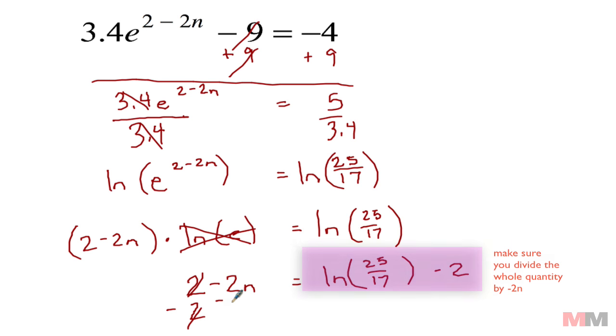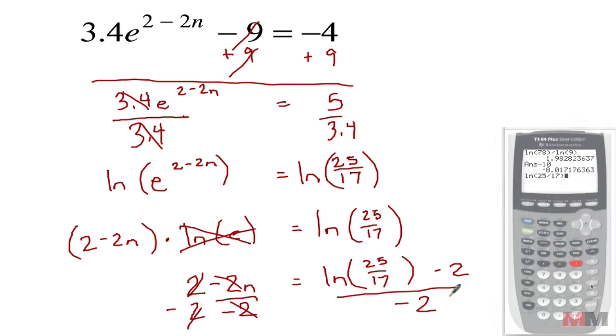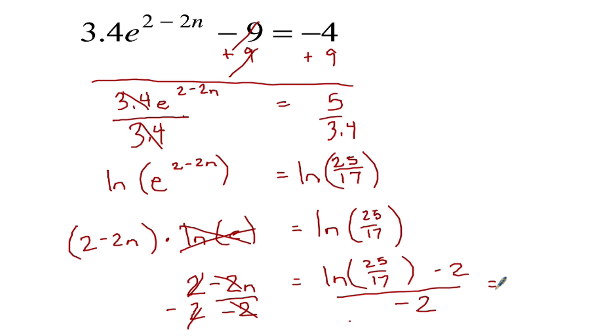Now we're getting closer, we want n by itself. Simple algebra from this point: subtract 2 from both sides and then divide by negative 2. And we got the answer, all of this we can put in the calculator, round it to the nearest tenth, which equals about 0.8. That was a beast of an equation, but it's not too bad, just remember your properties.